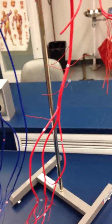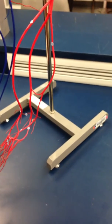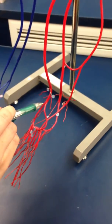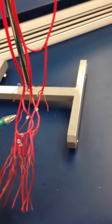The dorsalis pedis artery is this one right in here. It's medial. It's what the anterior tibial turns into.